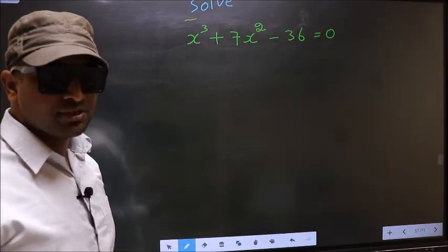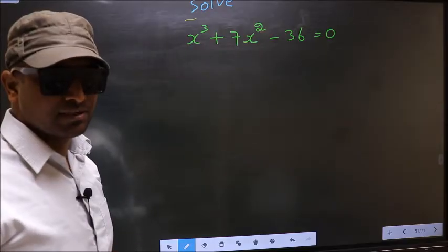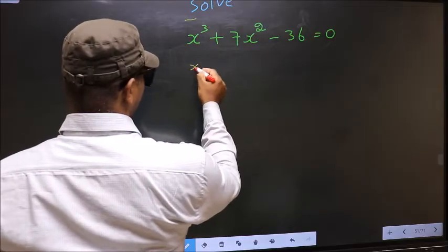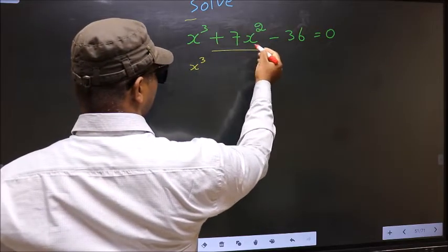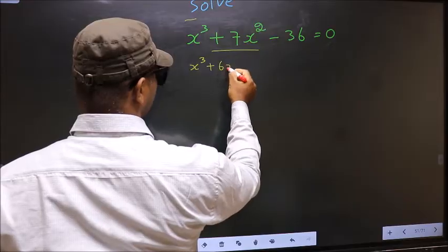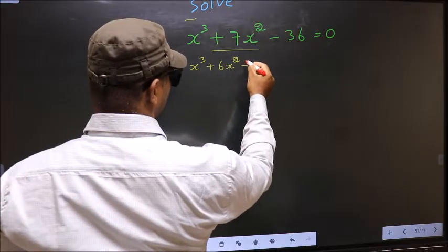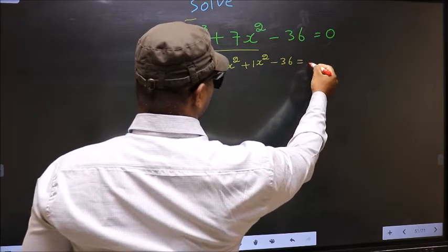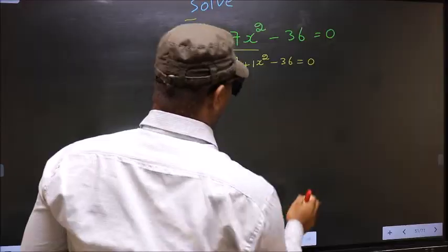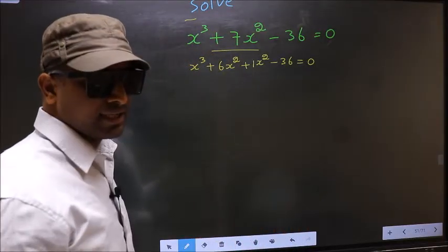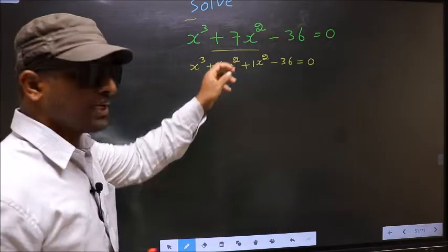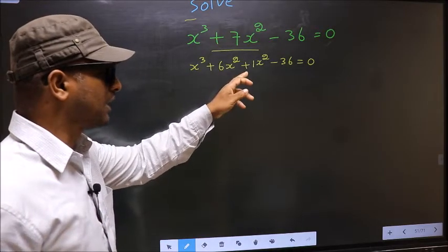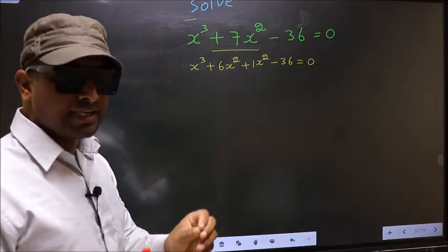For that, here we should change the x square term. In place of plus 7x square, now I write plus 6x square plus 1x square minus 36 equal to 0. In place of plus 7x square, I have written plus 6x square plus 1x square.